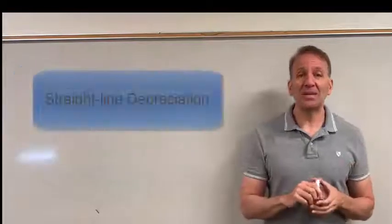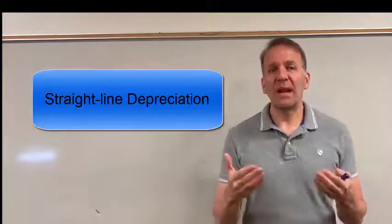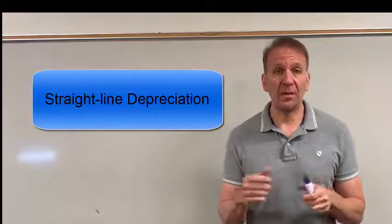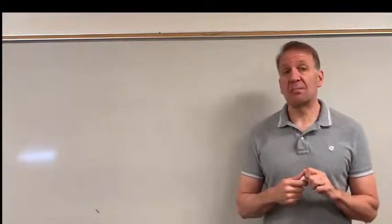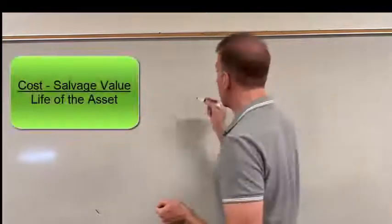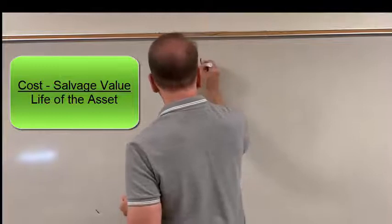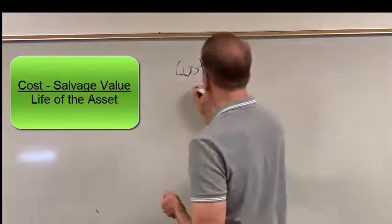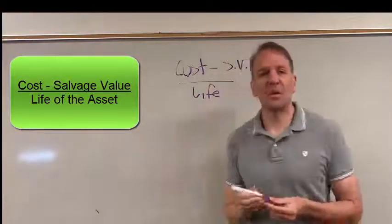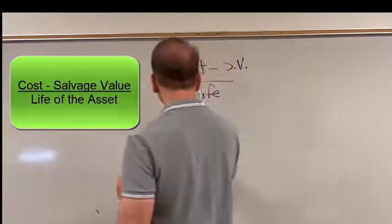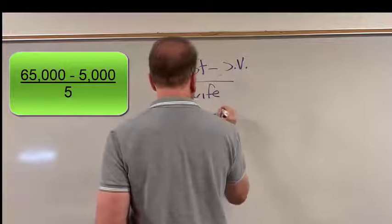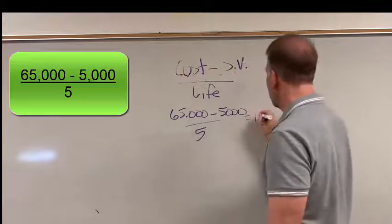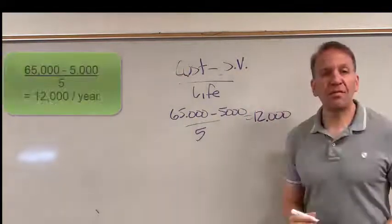In this first example, we're going to assume that we purchased this on January 1st so that we had it for a full year. Under straight line depreciation—one of many different depreciation methods we can use—the calculation is pretty simple. We're going to take the cost of the asset, subtract out the salvage value, and then divide it by the life. So the cost of this asset was $65,000, the salvage value was $5,000, and the life was five years. This gives us a depreciation of $12,000 a year.